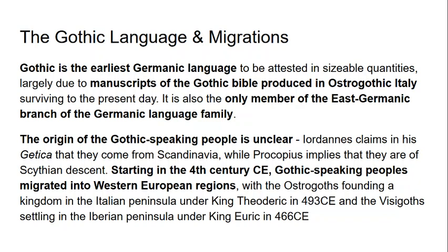There are two historical sources which give an opinion on the origin of the Gothic-speaking people. Jordanes claims in his work the Getica that the Goths originate from Scandinavia, whereas Procopius claims they come from Scythia — although Scythia is really just a place where barbarians can come from in the Greco-Roman imagination, so this doesn't say very much.